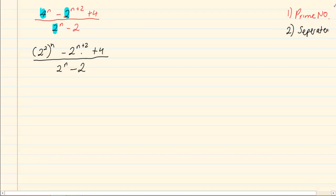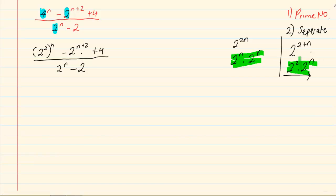Now at this stage for grade 11 you must be careful. 2 to the power of 2 plus n separates into 2 to the power of 2 times 2 to the power of n. But 2 to the power of 2n becomes 2 to the power of n times 2 to the power of n. You must be able to tell the difference between these two equations.